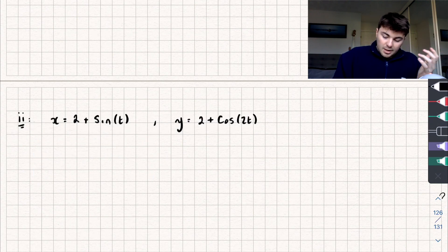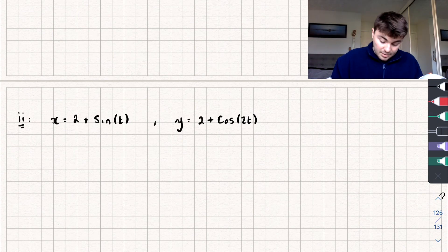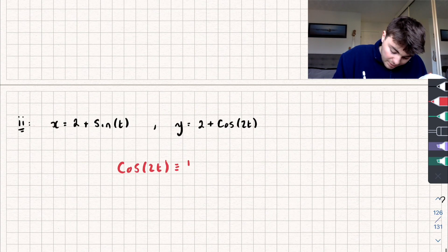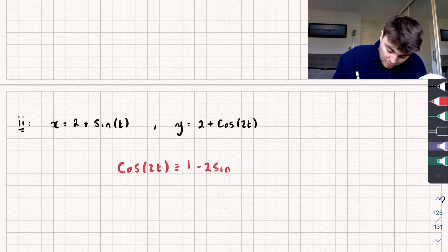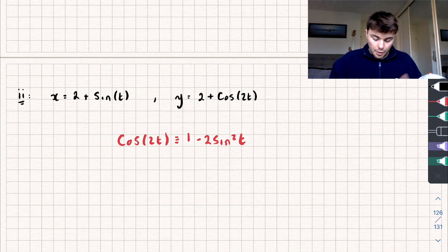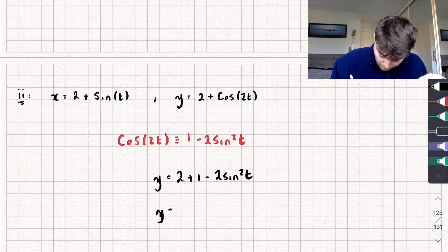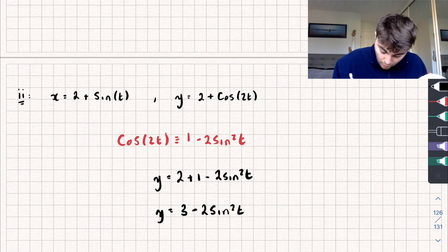But what we could do is we could substitute in sine of t into the other equation, because that's still removing our parameter. And so the way we could do that is by using a trig identity. We could say that cos of 2t is actually identical to 1 subtract 2 lots of sine squared of t. And so using that to rewrite our equation for y, we get that y is now equal to 2 plus 1 subtract 2 sine squared of t, which is, if we neaten it up, y is equal to 3 subtract 2 sine squared t.